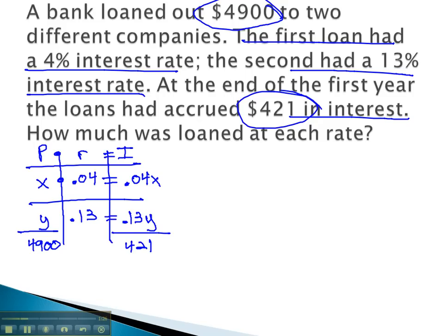We can now pull our equations, just as before, off the last column, giving us .04x plus .13y equals 421. And the last column, which is x plus y equals 4900.